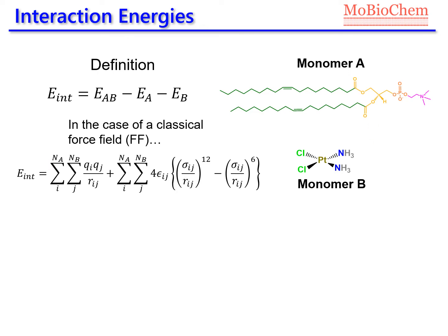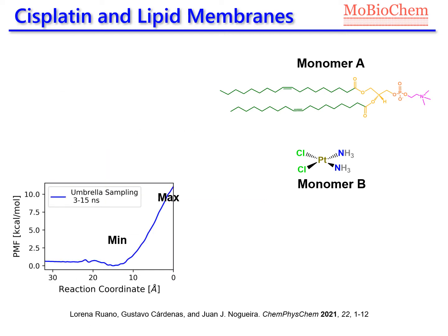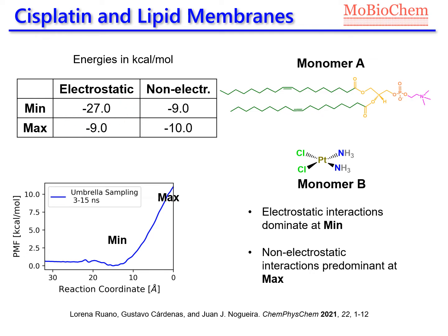If we want to partition the interaction energy, we can do so straightforwardly: we identify an electrostatic term and a non-electrostatic term consisting of Lennard-Jones potentials. Going back to our previous work, we performed this energy decomposition analysis at the minimum and maximum regions. At the minimum, the electrostatic term was predominant, whereas at the maximum the roles of the two terms were reversed.